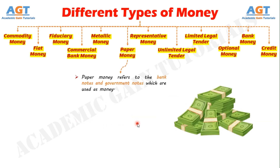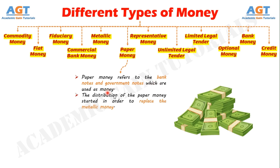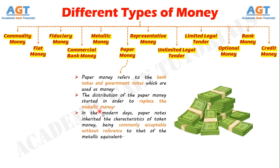Number 6: Paper Money. Paper money refers to the bank notes and government notes which are used as money. The distribution of paper money started in order to replace the metallic money. In the modern days, paper notes inherited the characteristics of token money, being commonly acceptable without reference to the metallic equivalent.